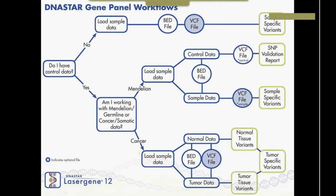Today we're talking about gene panel workflows, and all gene panel workflows aren't the same. We have a schematic — a decision tree — to figure out how we use the data and whether to use BED files or VCF files for different workflows. One of the first things to ask is: do I have control data? In many cases there is no control data, so it's straightforward: load the sample data, load a BED file and VCF file, and start your analysis.